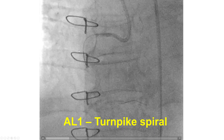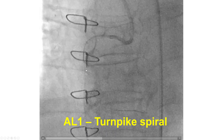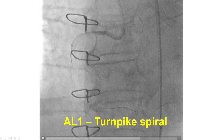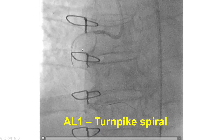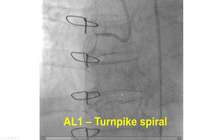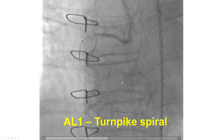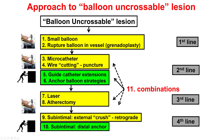We wired the native RCA relatively easily using a Turnpike Spiral microcatheter and a Sion Blue workhorse guidewire. But then no balloon would cross — the Turnpike would not go through either. We were now in an example of a balloon uncrossable lesion.